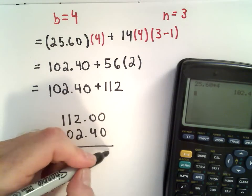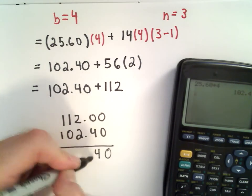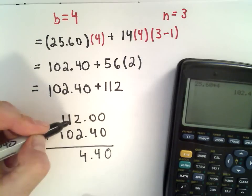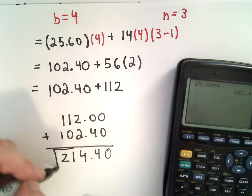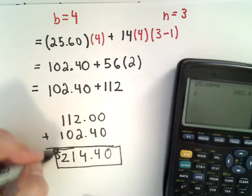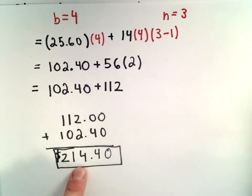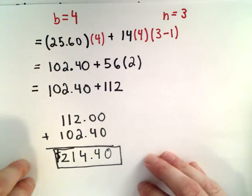we'll get 0 plus 4 is 4, 2 plus 2 is 4, 1 plus 0 is 1, 1 plus 1 is 2. I'm getting that our solution is that it's going to cost her a total of $214.40, which was answer choice A.